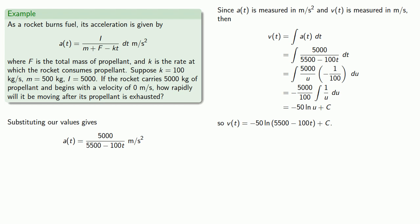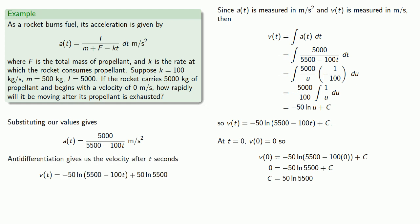To find the constant of anti-differentiation, we'll use the fact that our initial velocity is 0. And so that tells us that C is 50 log 5500, and we get our velocity after T seconds.